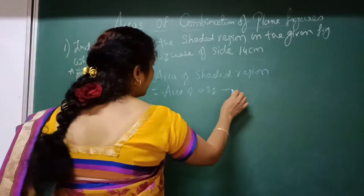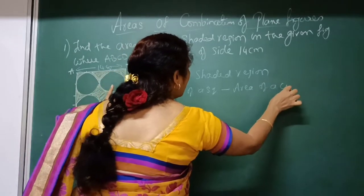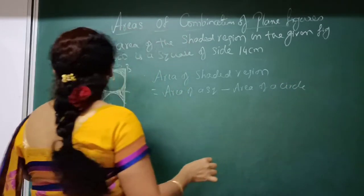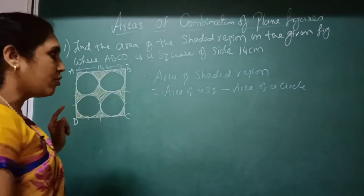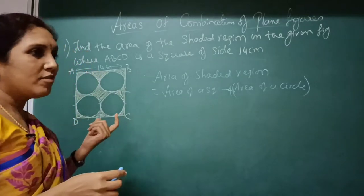So minus area of a circle, but totally you have 4 circles, so directly I will write here only 4 into area of a circle.